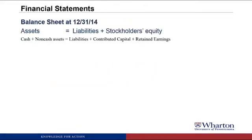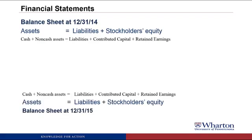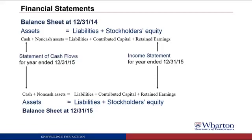Let me show you this graphically. Say we have a balance sheet at December 31, 2014: assets equal liabilities plus stockholders' equity, with assets split into cash and non-cash, and stockholders' equity split into contributed capital and retained earnings. Then at the end of 2015, the difference in retained earnings is explained in the income statement for the year ended December 31, 2015, and the difference in cash is explained in the statement of cash flows for the year ended December 31, 2015.